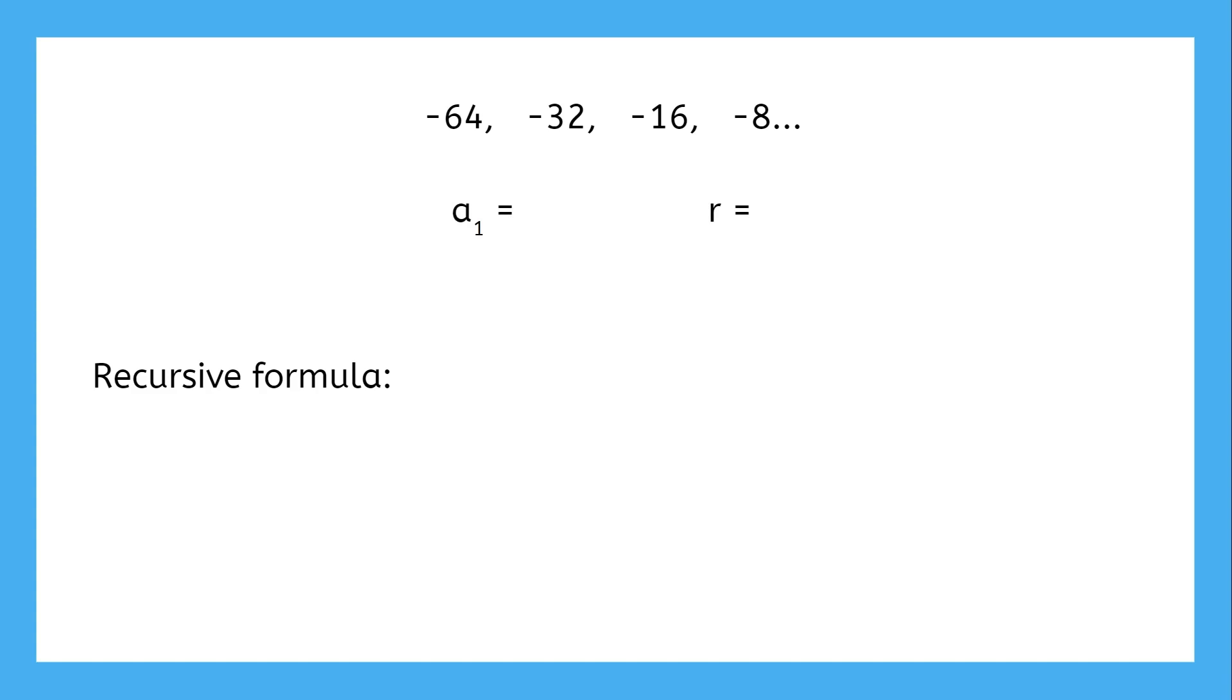Let's see how you did. The first term is negative 64. Negative 32 is half of negative 64, negative 16 is half of that, and negative 8 is half of that. So the common ratio is one-half. With those two pieces of information, we can write our formula.